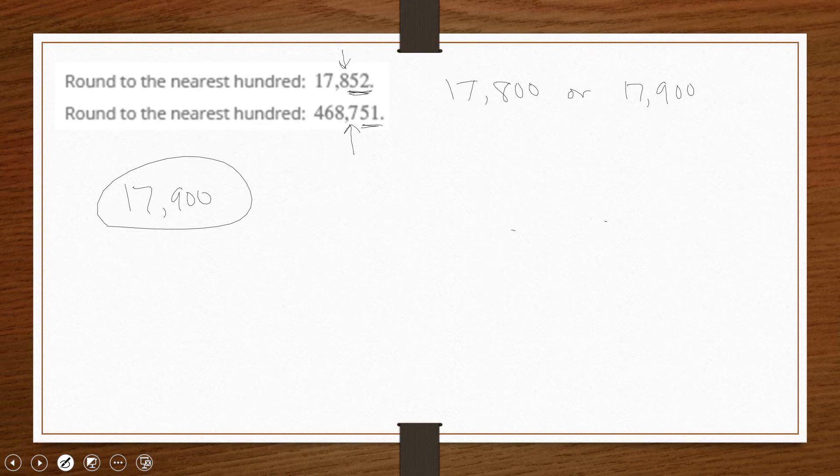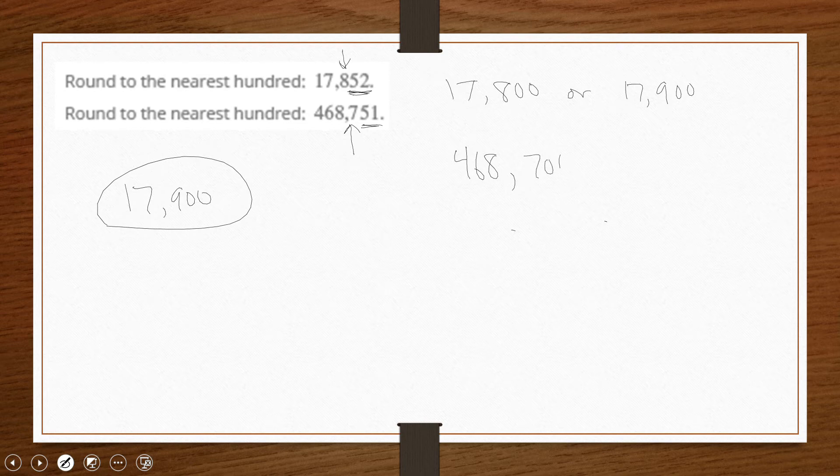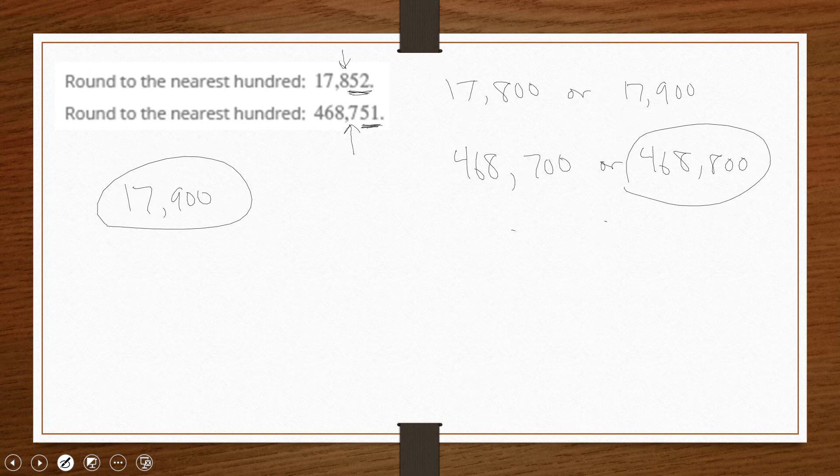In the second case, I have 468,751. Rounding again upwards tells me to decide whether or not this number is closer to 468,700 or is it closer to 468,800. And again, because of the digit to the right being five, we would say it's closer to 468,800.